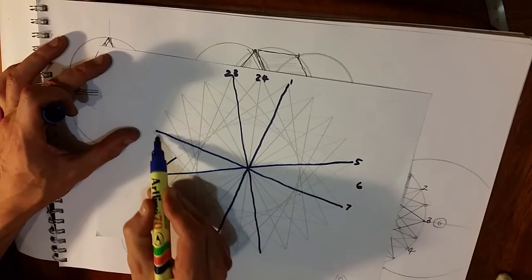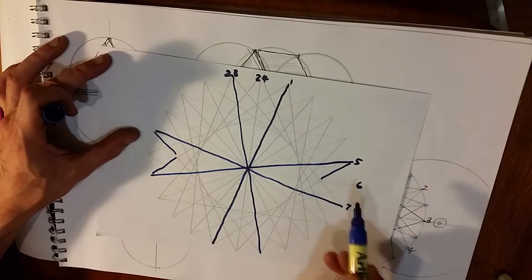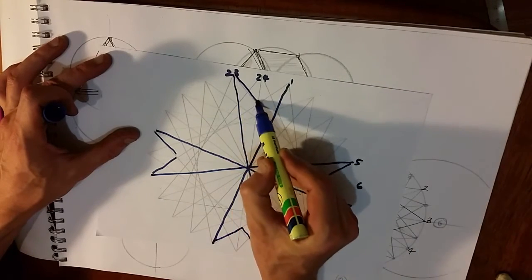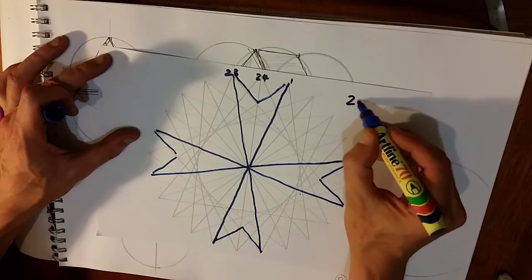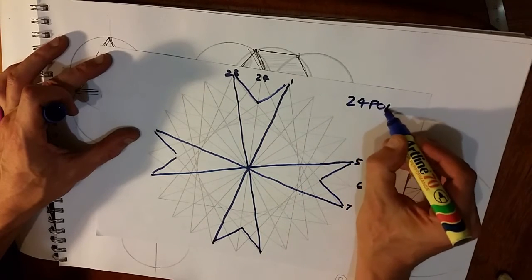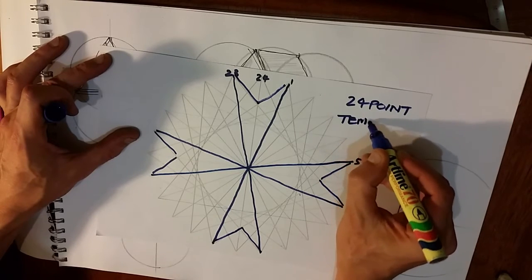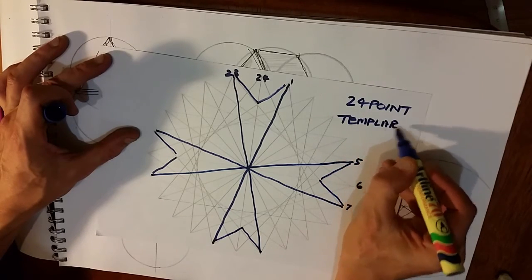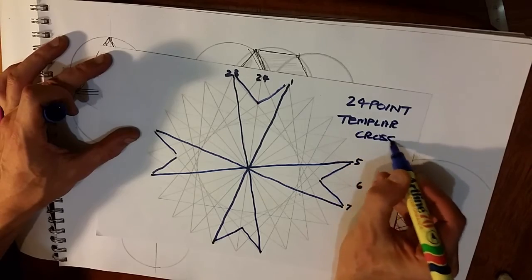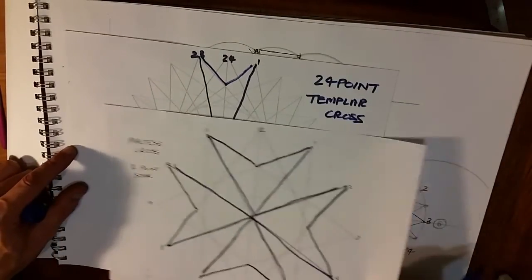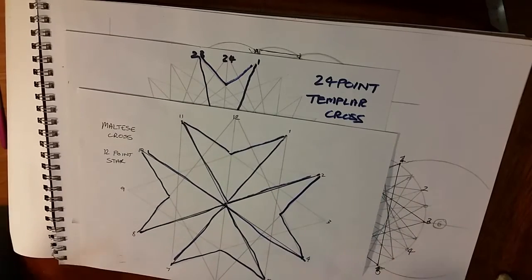Now we can finish it off. Now we have our 24-pointed star and the Templar cross, as opposed to the 12-pointed star and the Knights of Maltese cross.